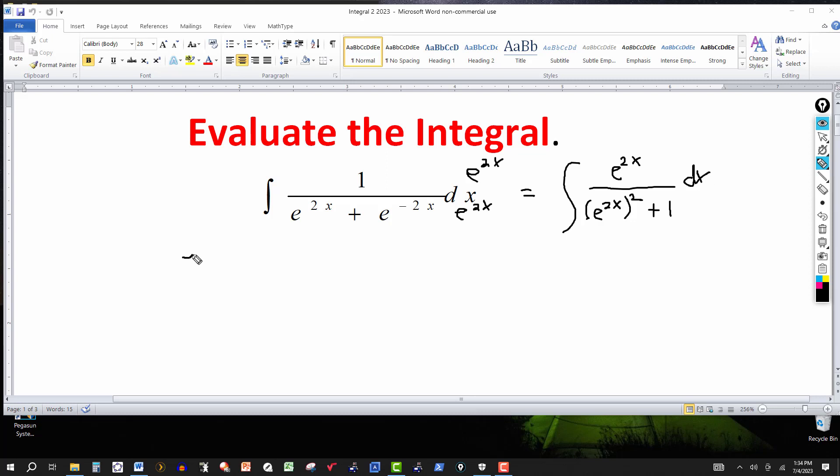So I'm going to let u equal e to the 2x. Then du would equal the derivative of e to the 2x, which is e to the 2x times the derivative of 2x, which is 2, and then this would be dx here. Divide by 2, we get du over 2 equal to e to the 2x dx.